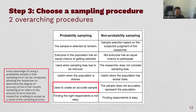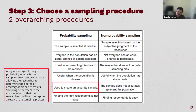A key advantage of probability sampling is that we can compute things like sampling error, margin of error, and confidence intervals — all of which help us understand how accurate our results are and communicate that to stakeholders or clients. So probability sampling is more accurate as long as those bias issues can be accounted for.